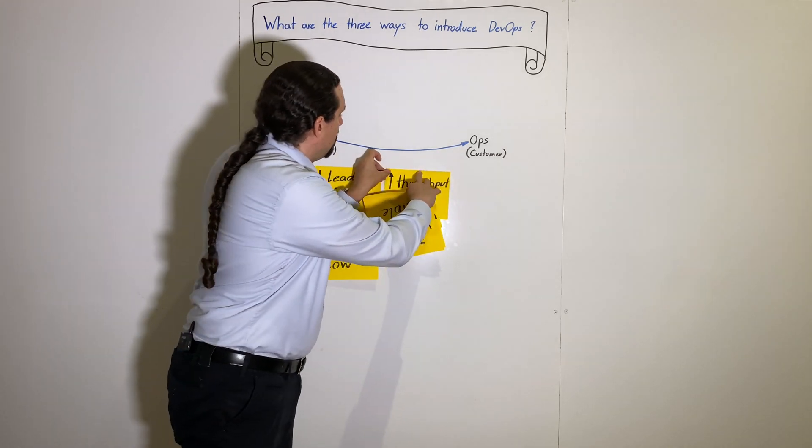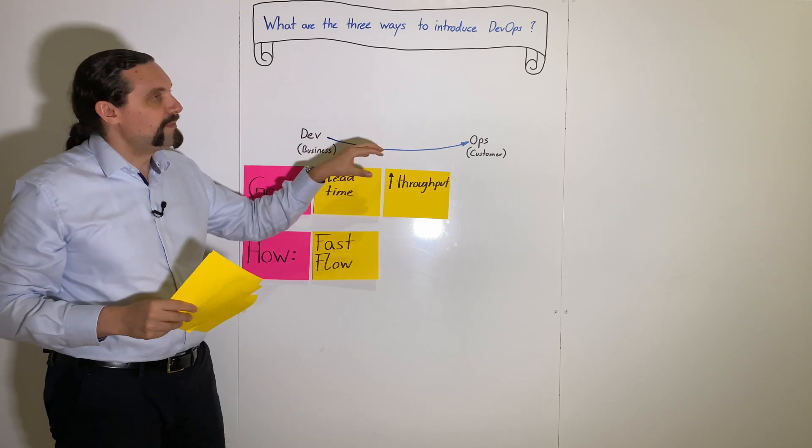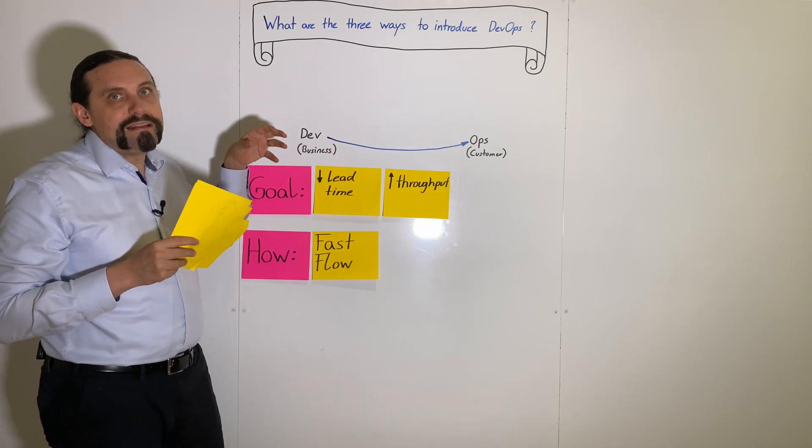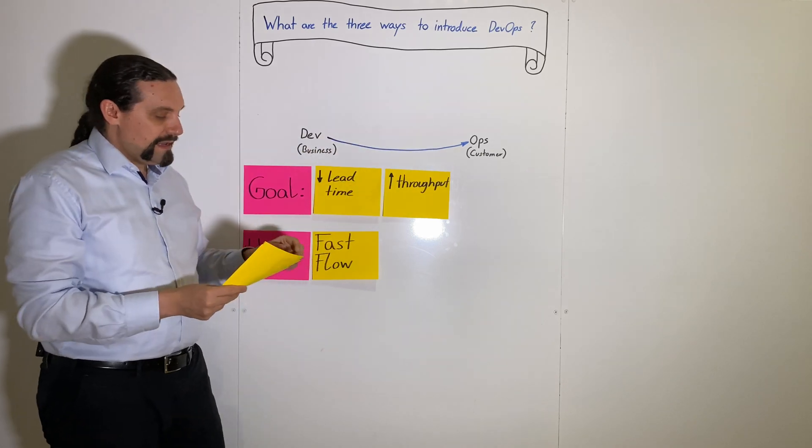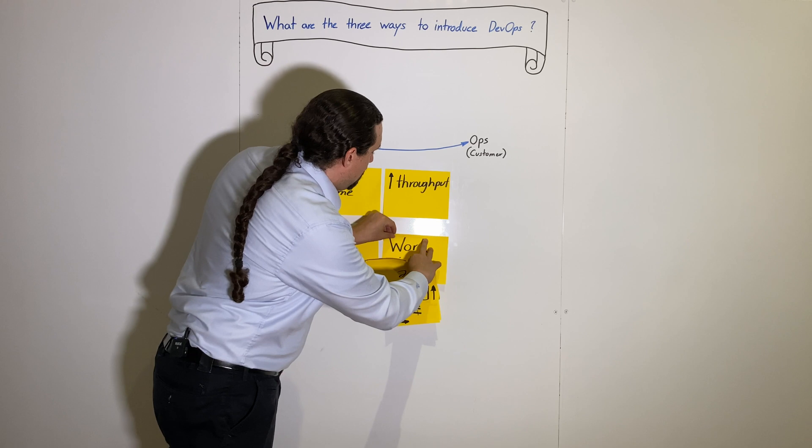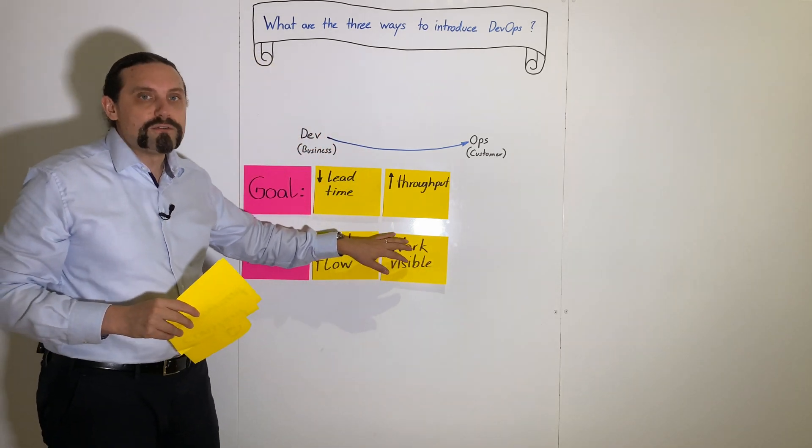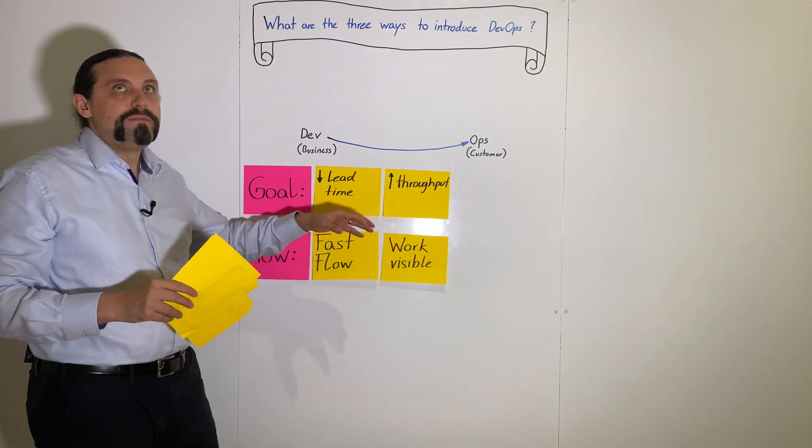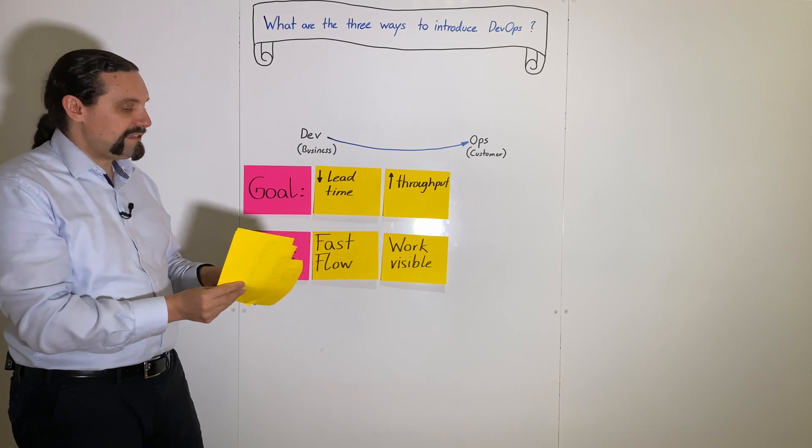The second goal is to increase the throughput. We want to deliver more value to the customer and we do that by first making the work visible. We do that by introducing a Kanban board or a scrum board to visualize the work or the flow through the system.